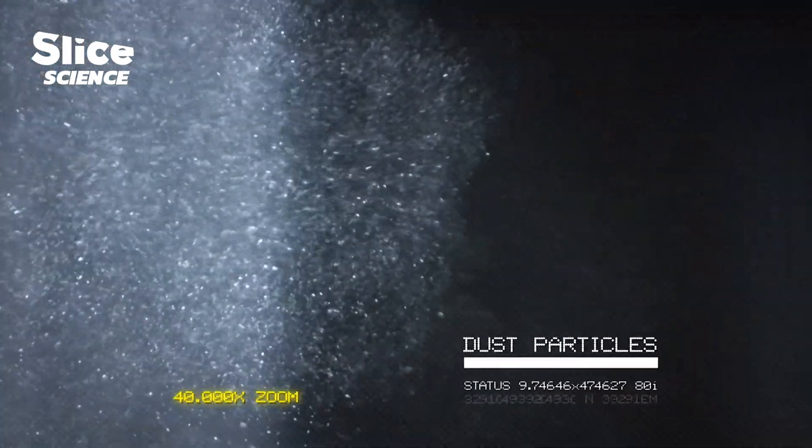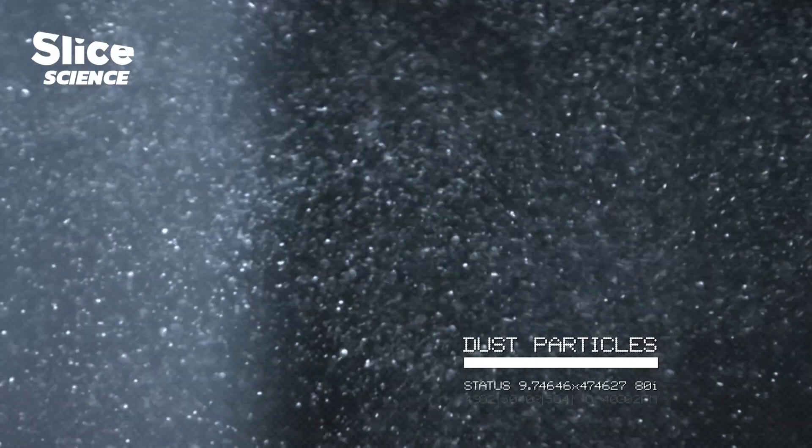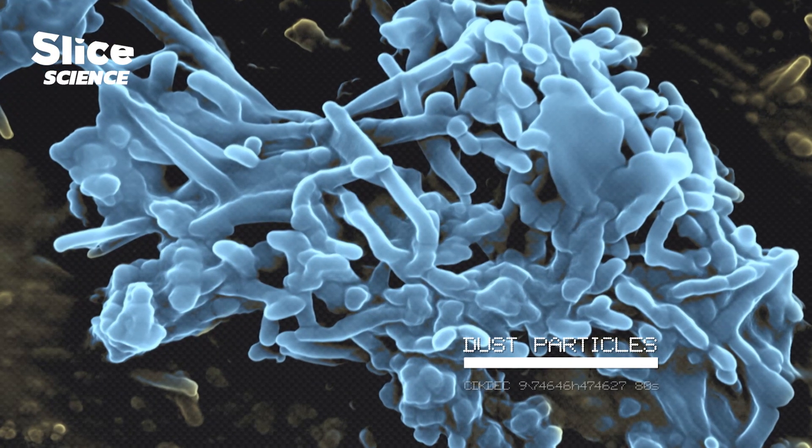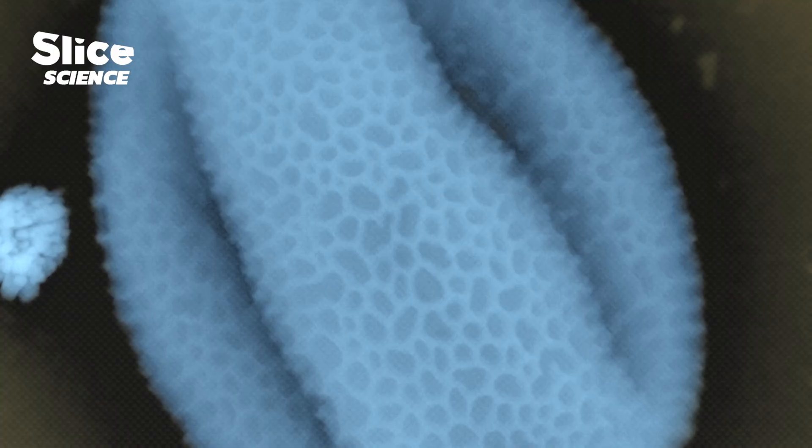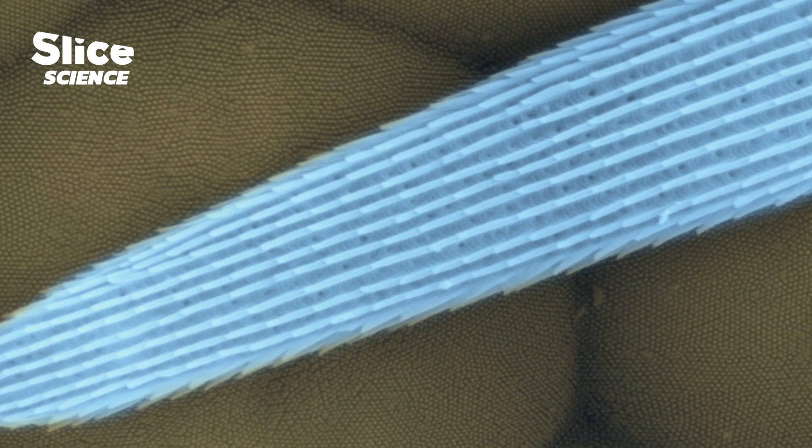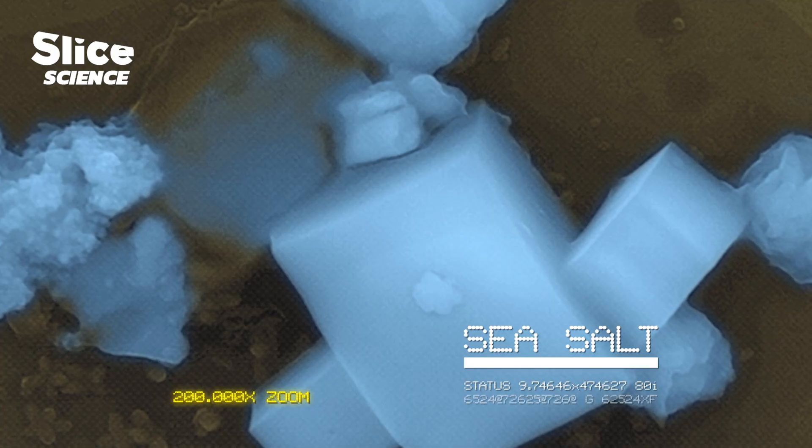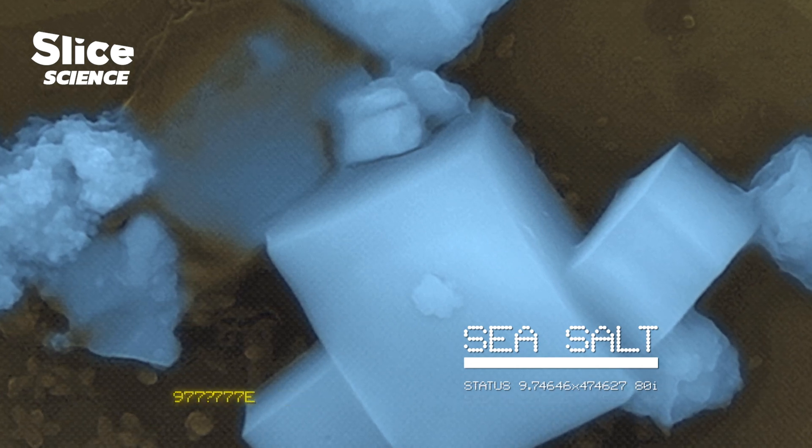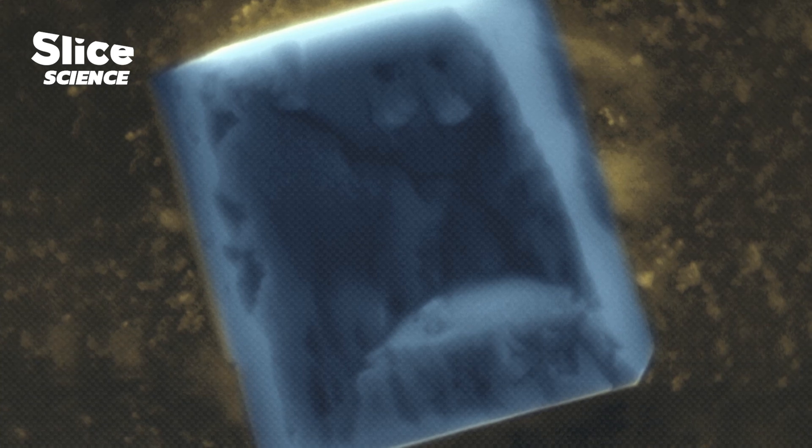Tiny dust particles only visible when magnified 40,000 times can also infiltrate the home through windows: soot from chimneys and car exhausts, plant pollen, even salt crystals from the ocean. They all become part of the eclectic mix that make up our household dust. As ironic as it seems, the oceans are the greatest producer of dust on earth.